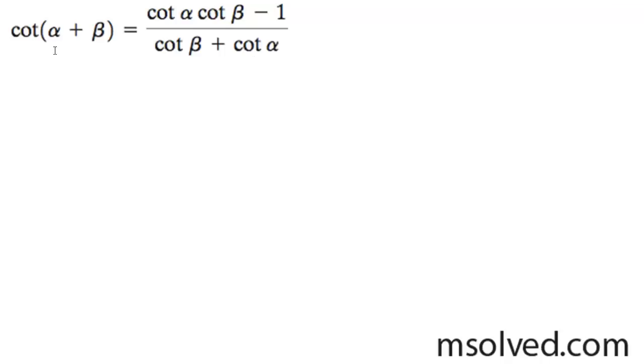I'm going to prove the left side is equal to the right side for this trig identity. So I'm going to start off with the left side here, but I'm going to rewrite this as cosine of alpha plus beta over sine of alpha plus beta. That's the same thing as the cotangent.